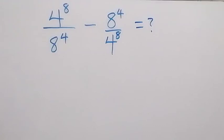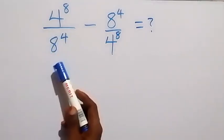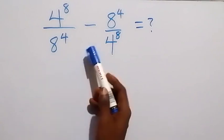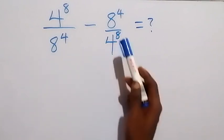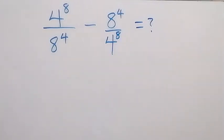Hello, you are welcome. How to solve this nice exponent problem: 4 raised to the power 8 divided by 8 raised to the power 4, minus 8 raised to the power 4 divided by 4 raised to the power 8.